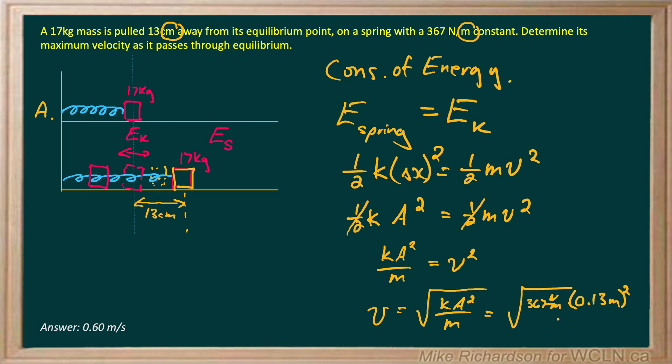All divided by my mass, which is 17 kilograms, and that whole thing gets square rooted to give me a maximum velocity of 0.60 meters per second when it passes through equilibrium.